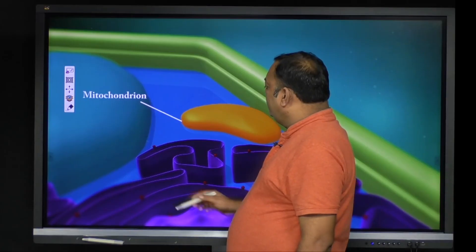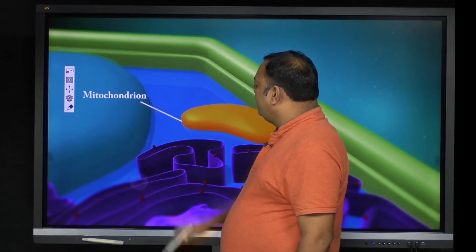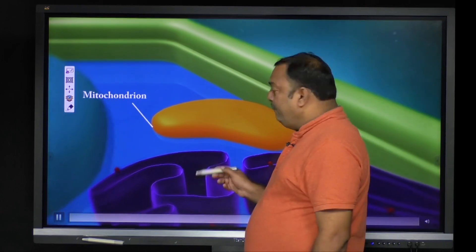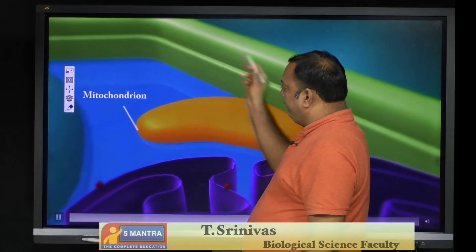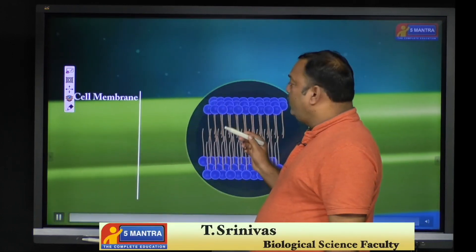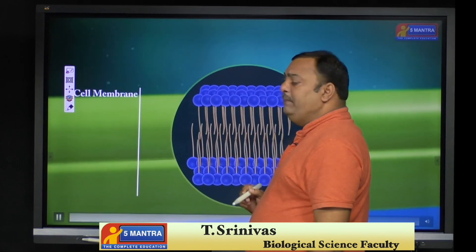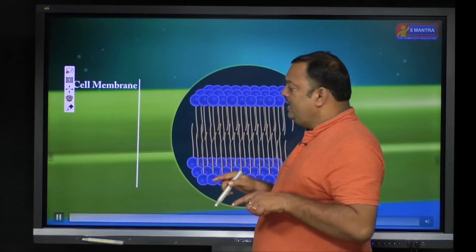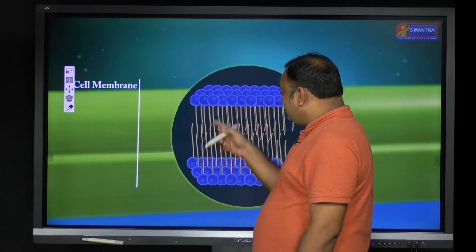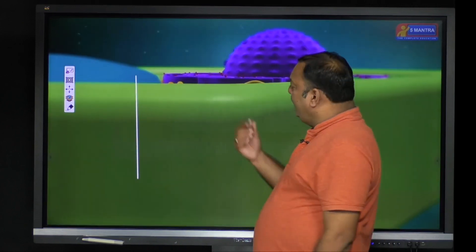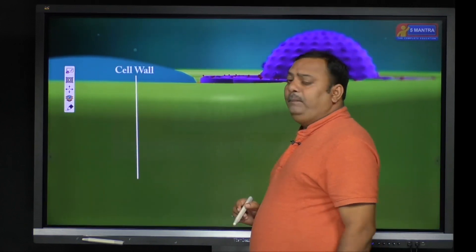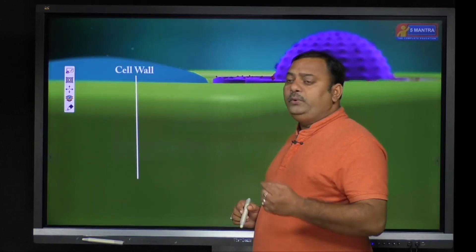We are going to discuss about the other cell organs now. I can show you the membrane — the layer. We know that when you come to the cell, it is covered by a layer called the cell membrane. The membrane acts like a layer, and this is the view we are going to see inside. Later on, we will come to the cell wall.